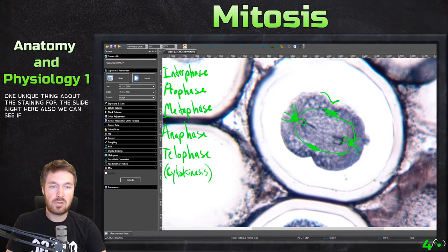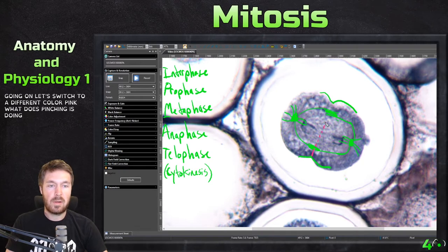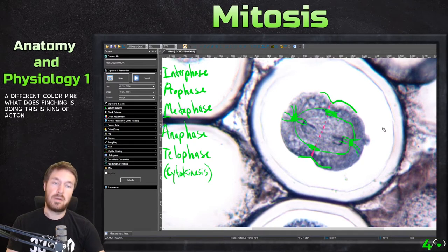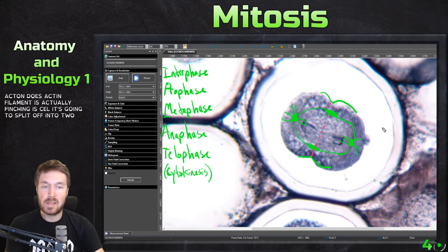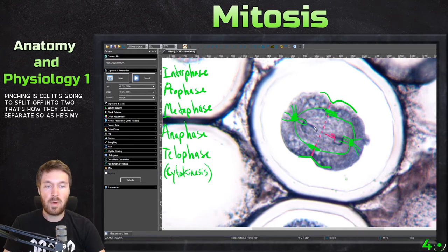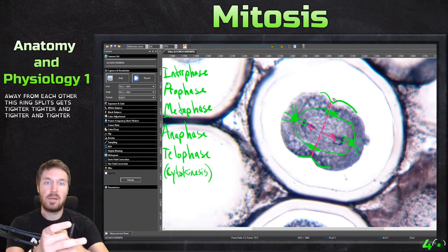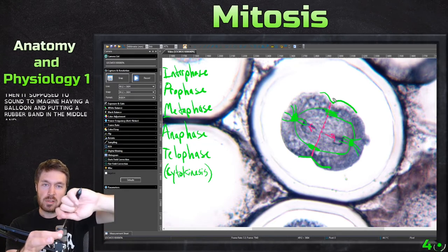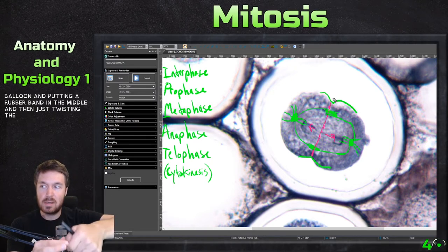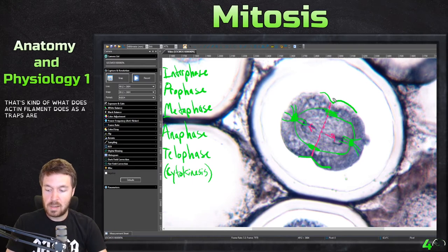We can also see that if I draw the outline of the cell, there's some pinching going on. What this pinching is doing is this ring of actin. This actin filament is actually pinching the cell and it's going to split it off into two — that's how the cells separate. As these move away from each other, this ring gets tighter and tighter and then it splits the cell into two. Imagine having a balloon and putting a rubber band in the middle and twisting it — that's kind of what this actin filament does as it wraps around the cell membrane.